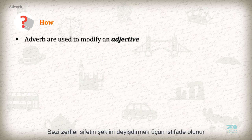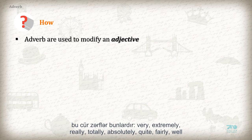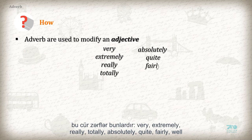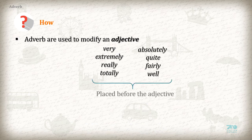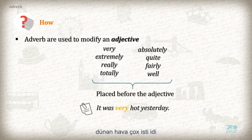Some adverbs are used to modify an adjective. Adverbs that do this include: very, extremely, really, totally, absolutely, quite, fairly, and well. These are normally placed before the adjective. For example: 'It was very hot yesterday.' 'He is totally crazy.'